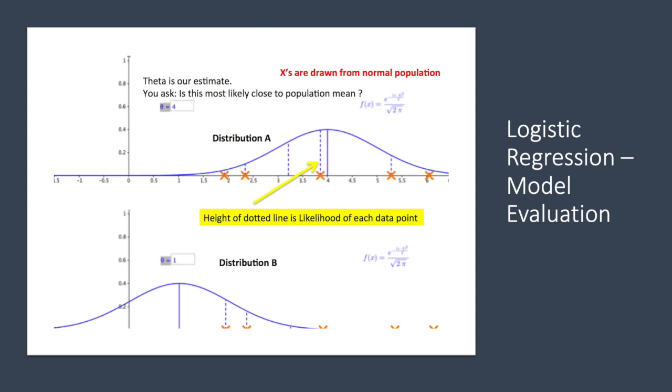As you see here, we have different distributions based on the different models that we have. And this dotted line is giving us the likelihood of each data point. I'm going to skip the mathematics here, but keep in mind that contrary to linear regression, there is no closed form solution to the above optimization problem. A typical numerical optimization procedure used in such cases is gradient descent.